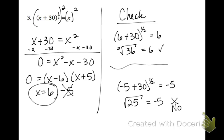On this last one, I raised both sides to the second power, because 1 half times 2 is 1. So that canceled out that rational exponent. I factored it, I got two answers, checked both of them, and the negative 5 did not work. Now, right here, just remember that anything to the 1 half is just the square root. So that's the square root of 6 plus 30. And down here, square root of 25 would have been 5, but it was equal to a negative 5, so that did not work.